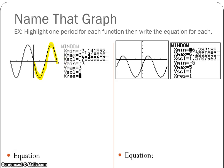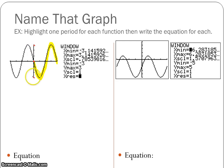Is it a sine or a cosine, and is it a negative or a positive? Since it starts at the origin, I know it's going to be a sine function because sine starts at the origin always, whereas cosine would start at its max or its min on the y-axis. It starts by going down, so I know it's a negative sine function.